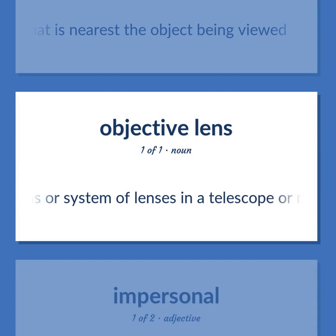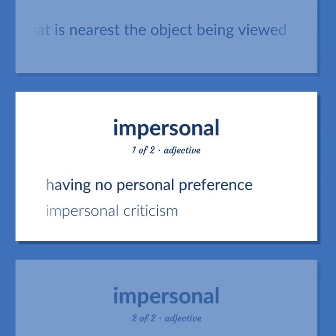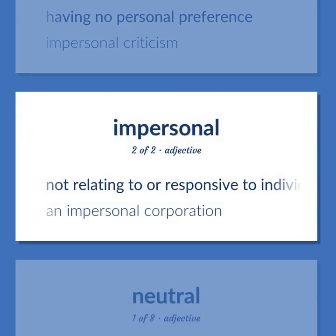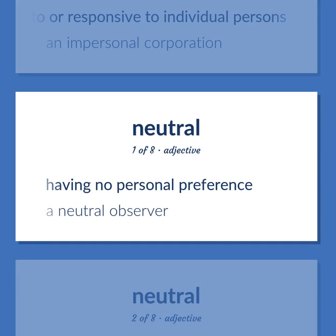The lens or system of lenses in a telescope or microscope that is nearest the object being viewed. Impersonal: having no personal preference. Impersonal criticism. Not relating to or responsive to individual persons. An impersonal corporation. Having no personal preference. A neutral observer.